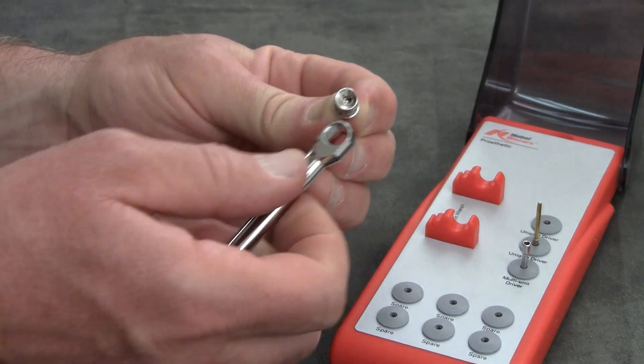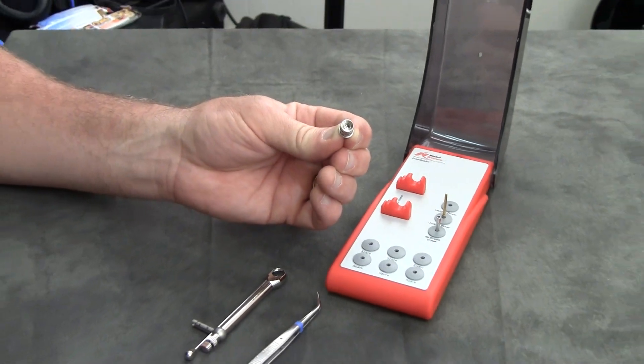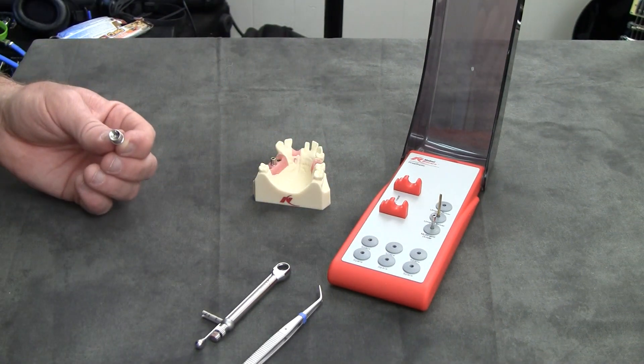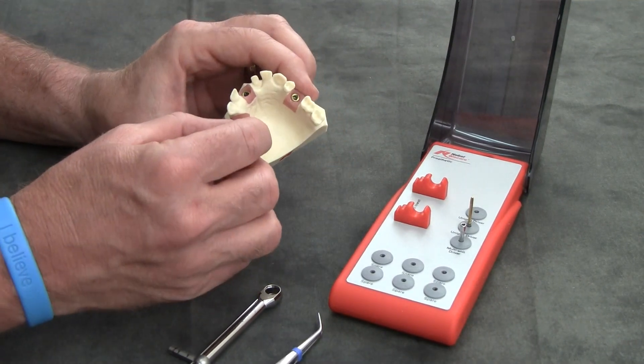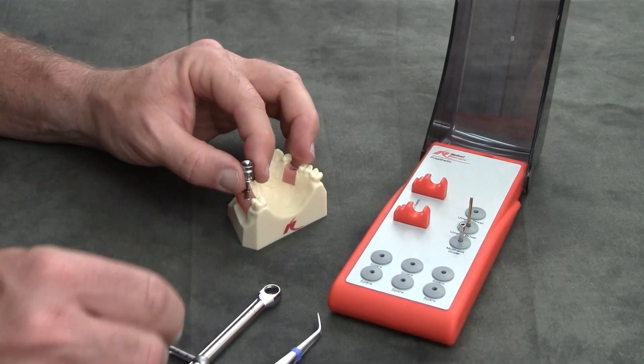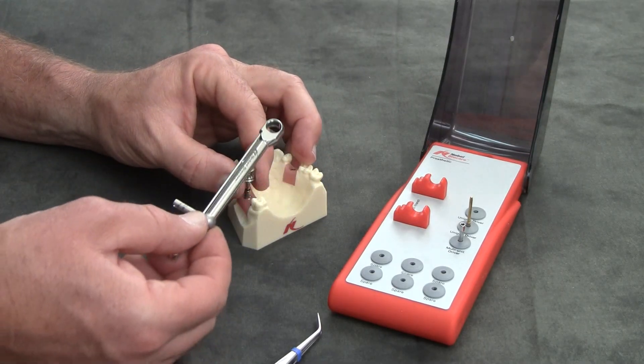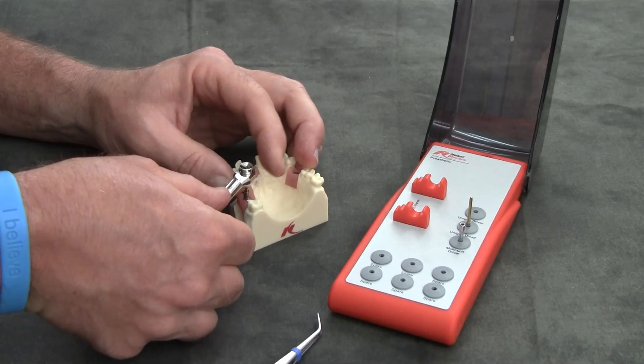The easiest way to tighten your screws using the torque wrench is to start by hand. Take this screw, tighten as tightly as possible by hand, and now the torque wrench coming again from the bottom. Engage, snap.